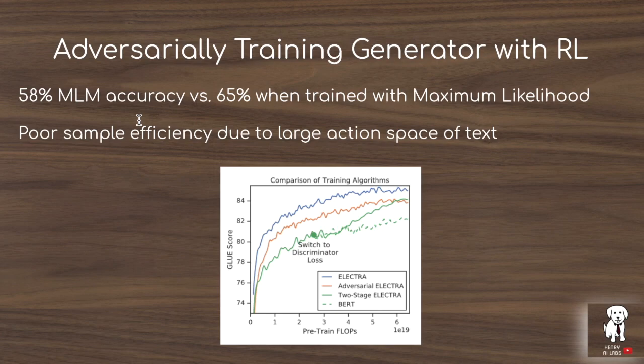They find poor sample efficiency due to the large discrete action space of text. Even though an adversarial objective — where the generator deliberately predicts tokens hard for the discriminator — might be useful, the reinforcement learning techniques for large discrete action spaces need further development. As of now, it doesn't outperform the original ELECTRA objective.